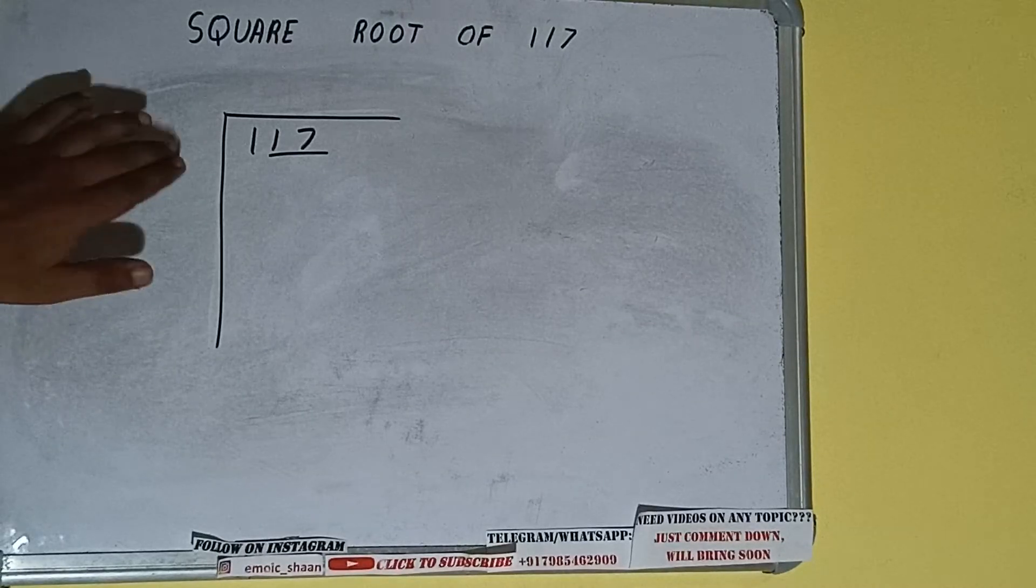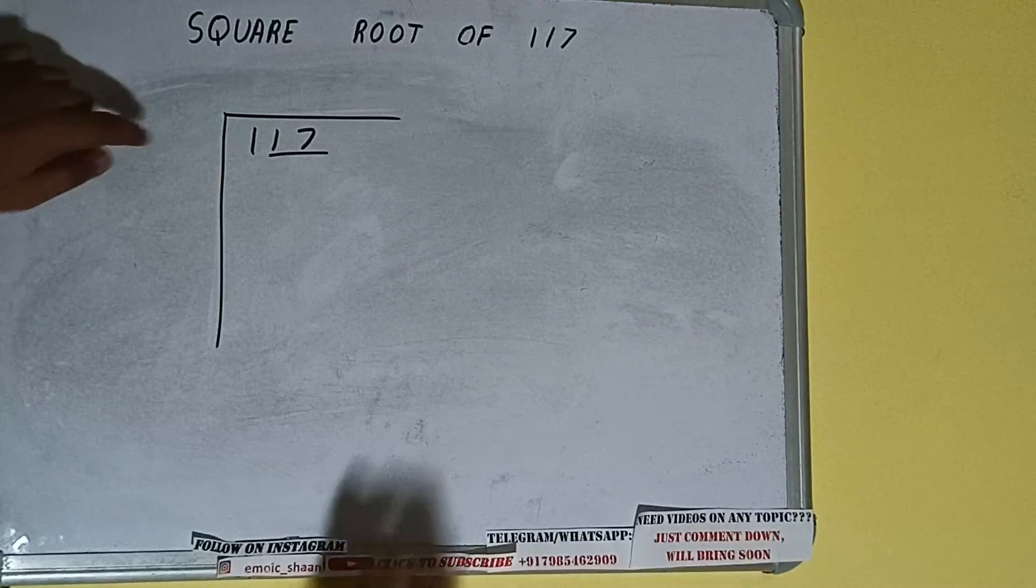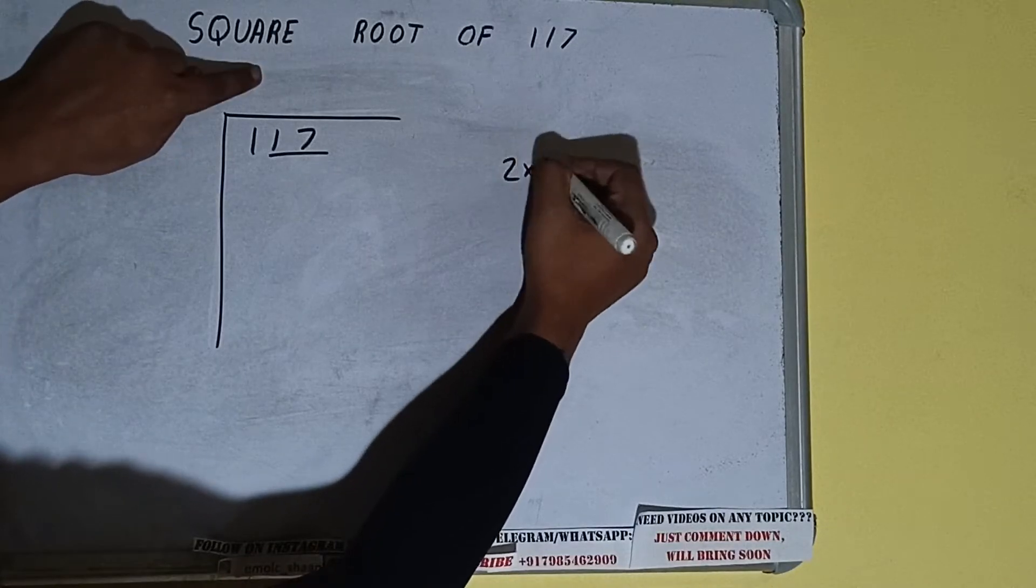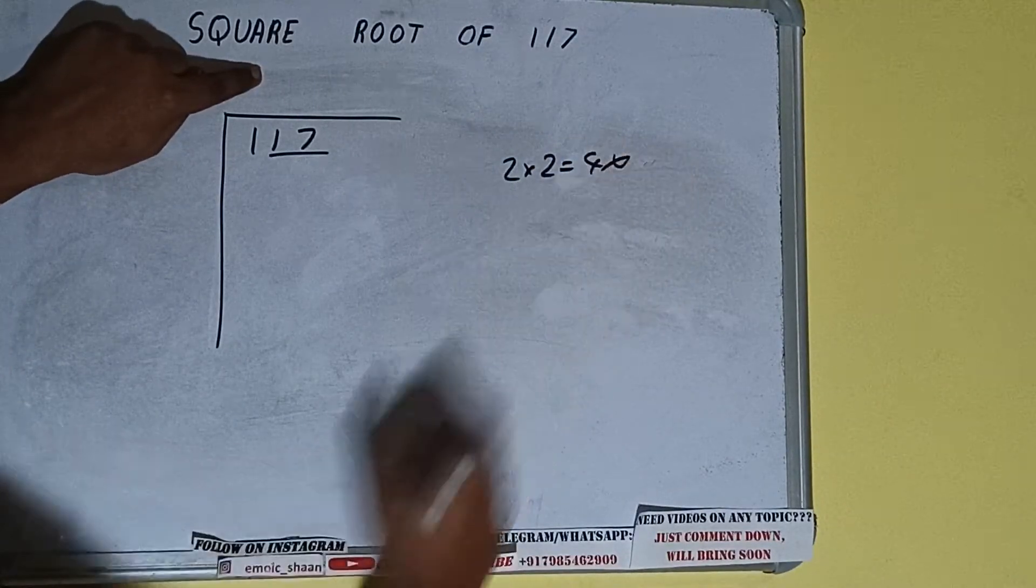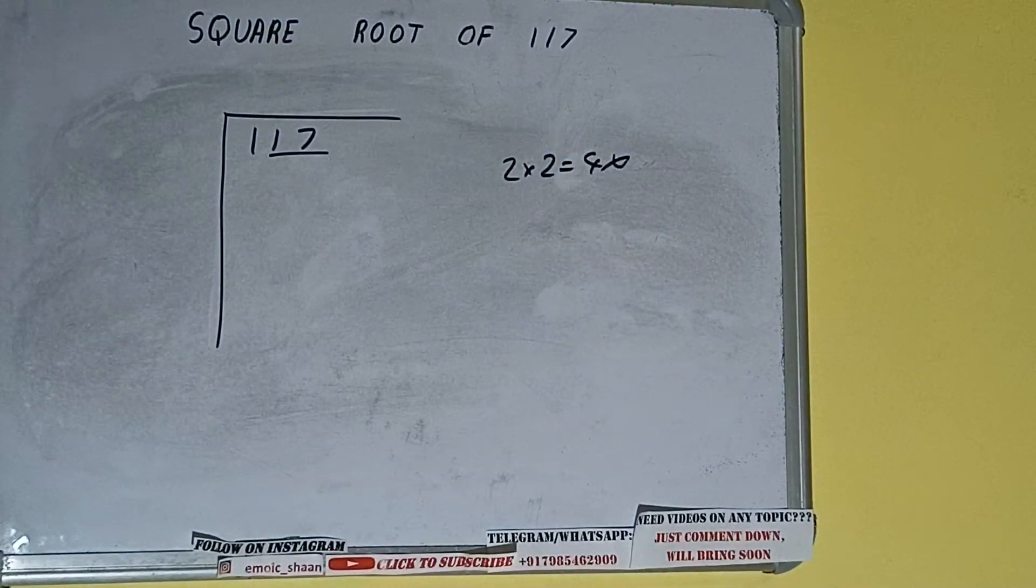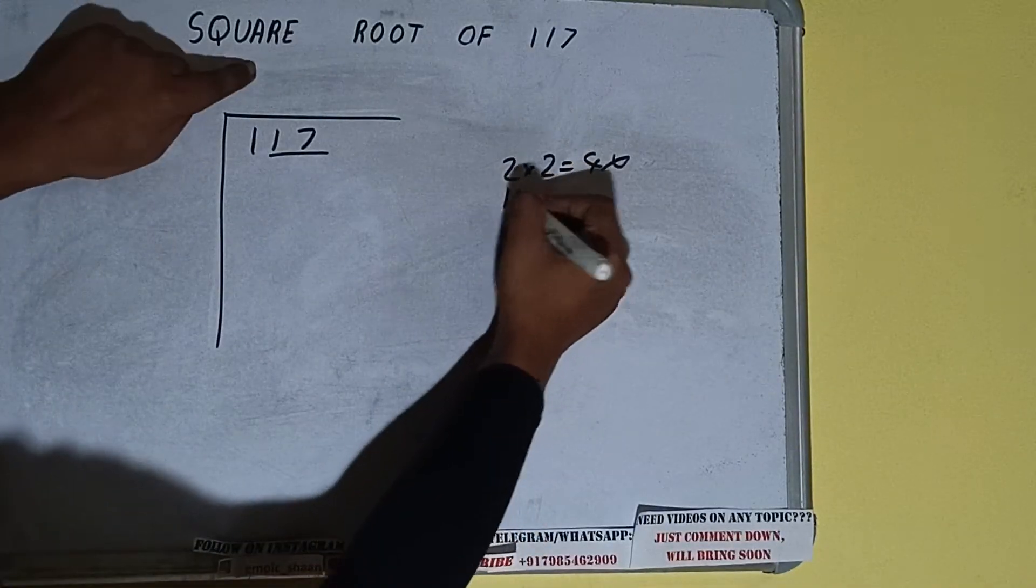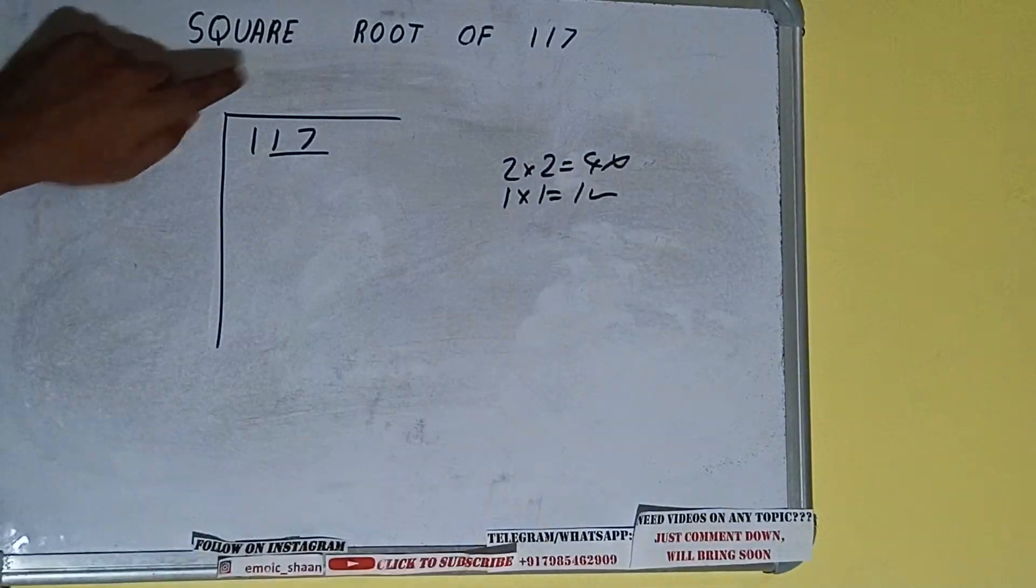The rule is whatever number we write here we have to write here also. So if we write 2 here and 2 here it will be 4 which is greater than 1, so we cannot take it. If we write 1 here and 1 here it will be 1 which is good to take.